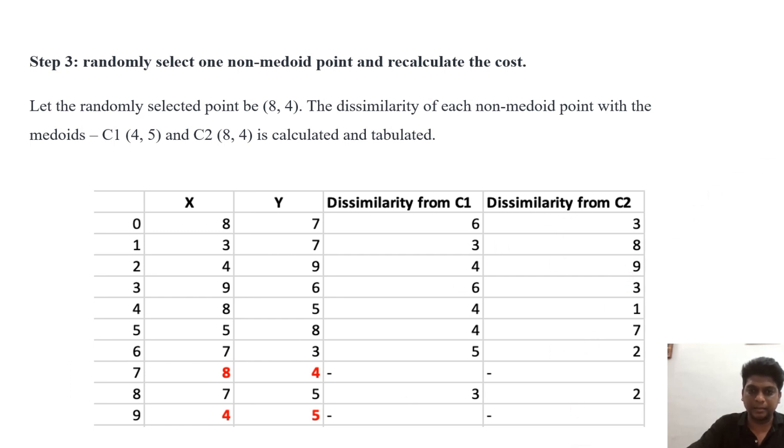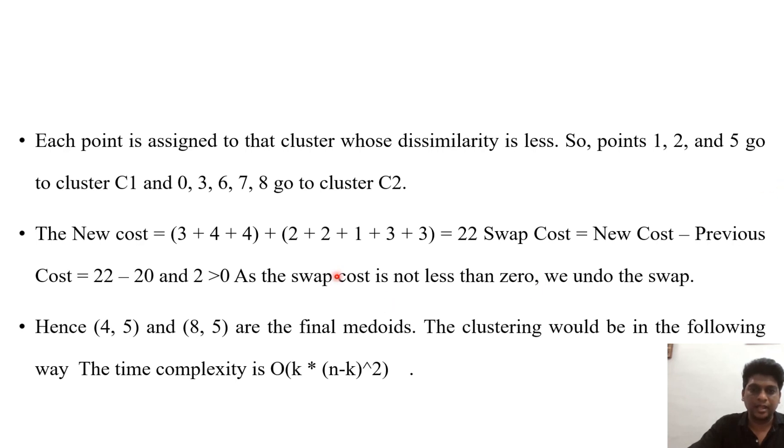So after completing table now we have to find the cost again that is a new cost value. After finding the dissimilarities when the value is minimum we have to assign them to that particular Medoids. So 1,2,5 goes to that Medoid C1 and 0,3,6,7,8 go to Medoid C2. Now find the new cost. The new cost is 22.